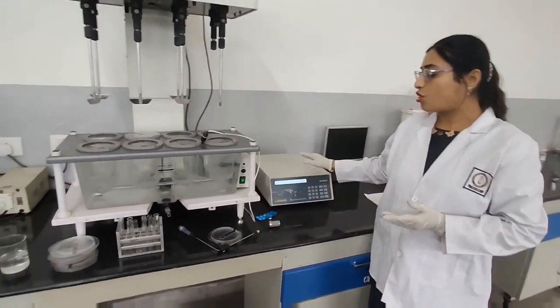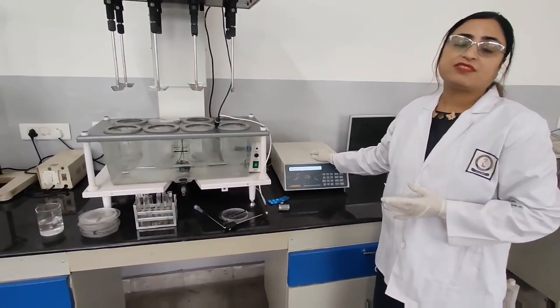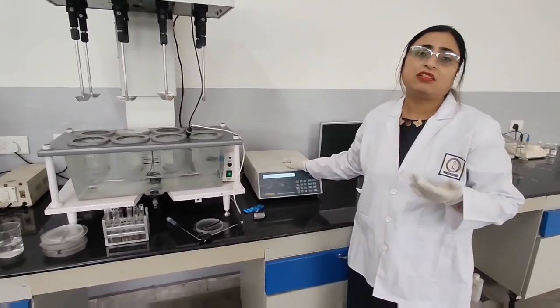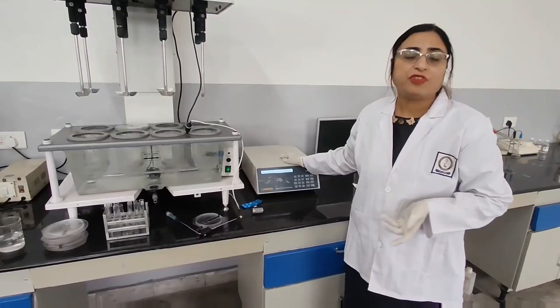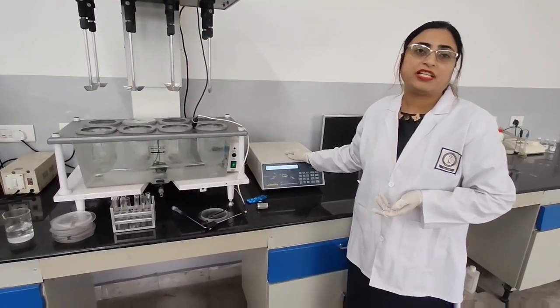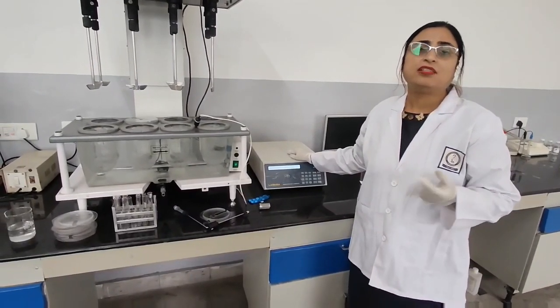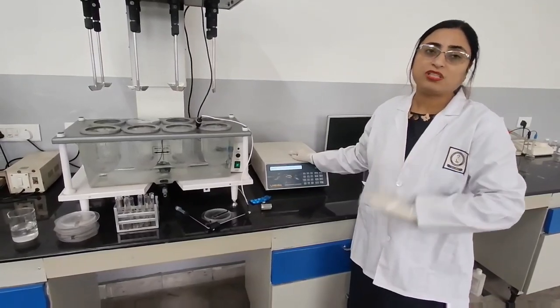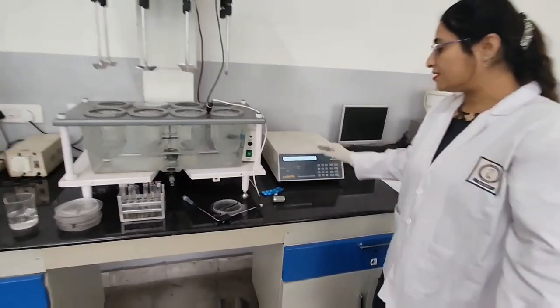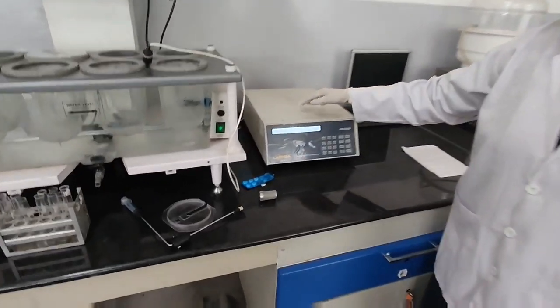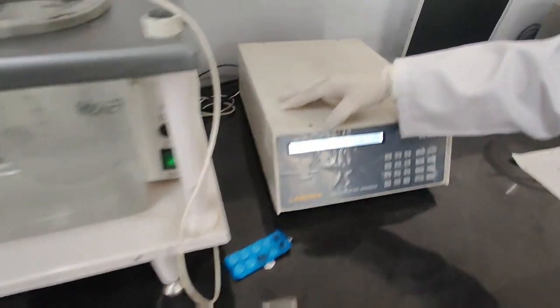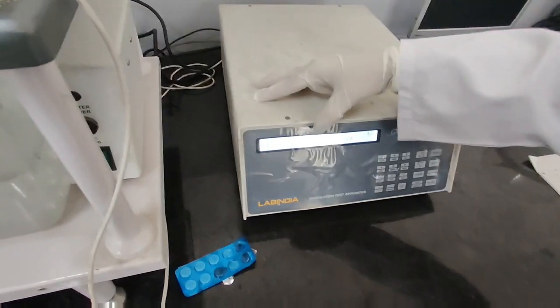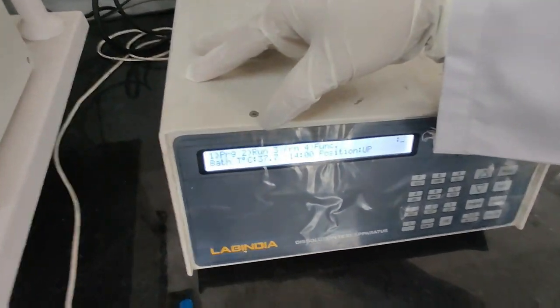After doing this, next part is this operating system. In this operating system, we will set the program: how much RPM we want, the number of samplings, the timing between samples. As we can see, there are four options: program, run, print, and function. First of all, we have to set the program. We will select one and then press enter.